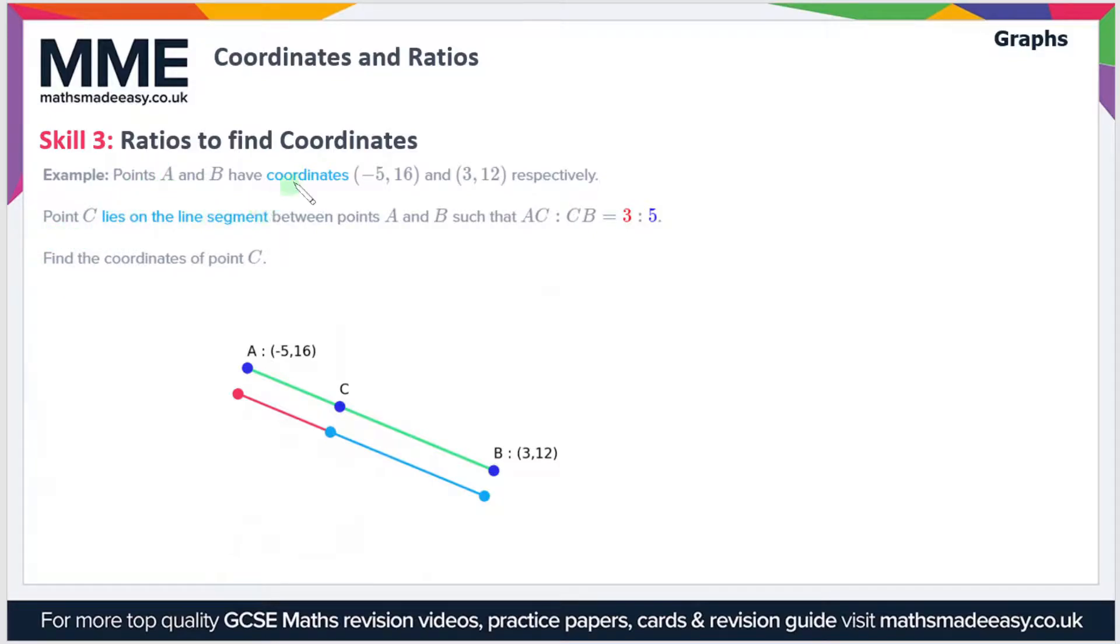In this example, points A and B have coordinates of (-5, 16) and (3, 12) respectively. Point C lies on the line segment between points A and B such that AC to CB is 3 to 5. Find the coordinates of point C.